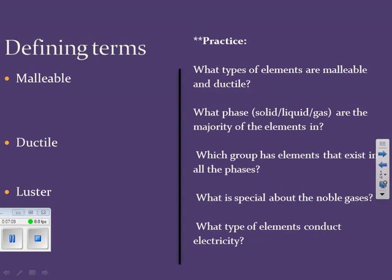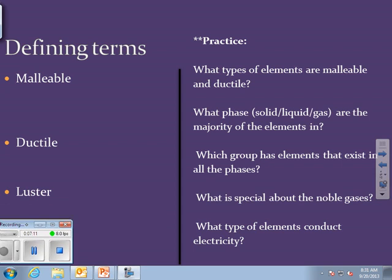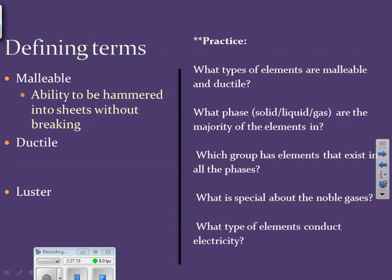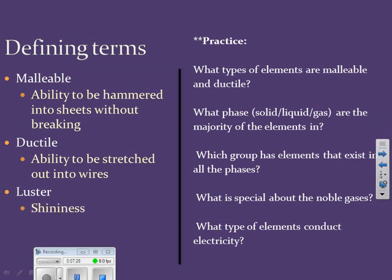Here are some defining terms you need to know. Malleable means the ability to be hammered into sheets without breaking. Ductile means the ability to be stretched out into wires. Luster refers to shininess. Most of these properties are regarding the metals on the periodic table.